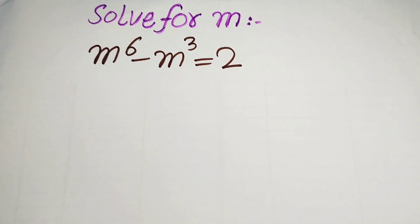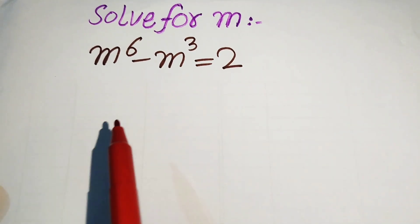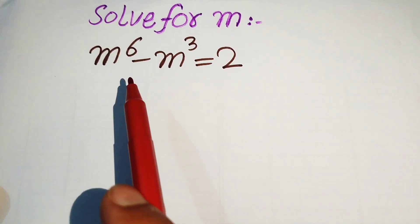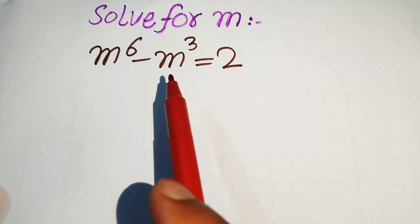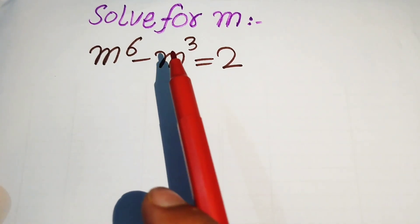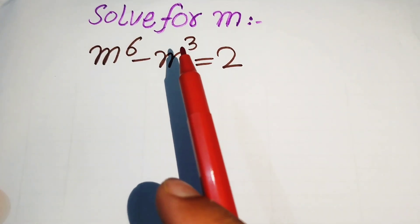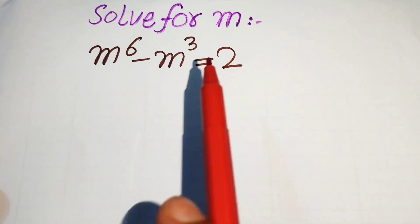Hello everyone, welcome to solve this math Olympiad algebra problem. Here we have m to the power of 6 minus m cubed equals to 2, and we solve this problem for the values of m.